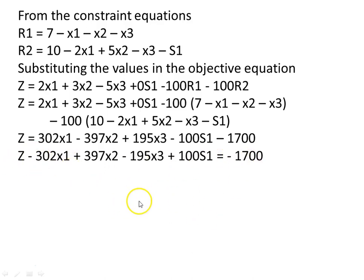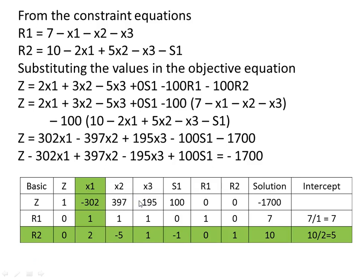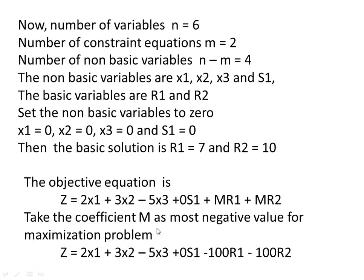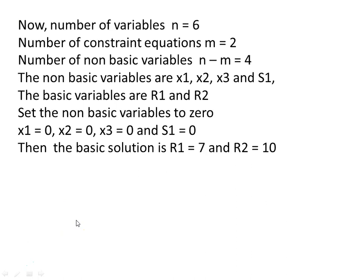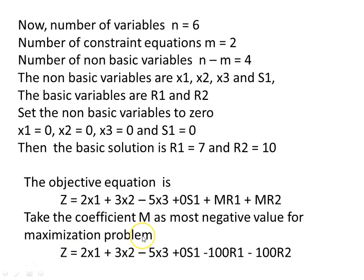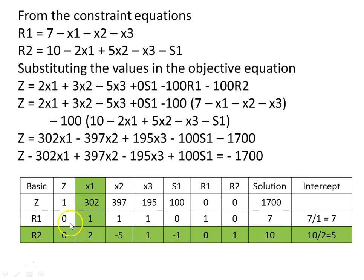This is the objective function, and all values are given in the starting tableau. The z-row contains: 1, −302, 397, −195, 100, 0, 0, −1700. The r1-row from the first constraint equation is: 0, 1, 1, 1, 0, 1, 0, 7. The r2-row from the second constraint equation is: 0, 2, −5, 1, −1, 0, 1, 10.